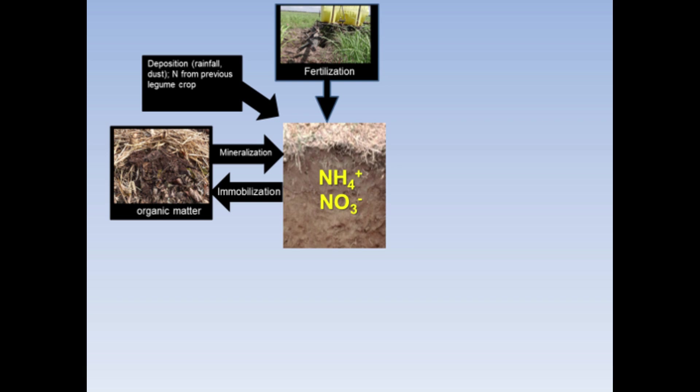Nitrogen can be added to the soil in many ways, such as fertilization. Nitrogen addition may also come from atmospheric deposition in the forms of rain and dust. Nitrogen may also be added from legumes when used as cover crops and in rotation with sugarcane. Nitrogen is also released from organic matter during the decomposition process.